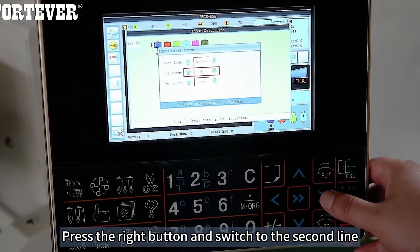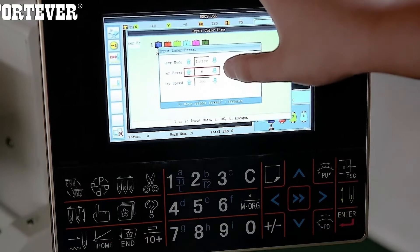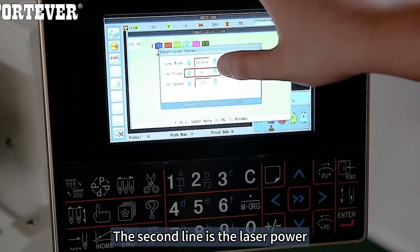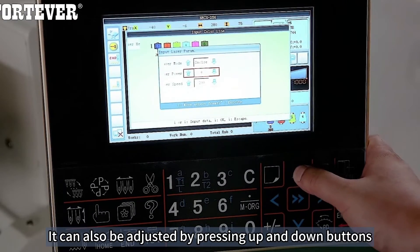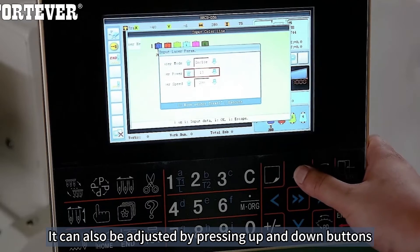Press the right button and switch to the second line. The second line is the laser power. It can also be adjusted by pressing up and down buttons.